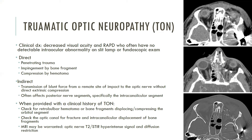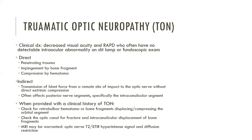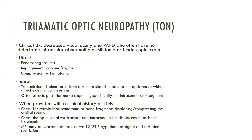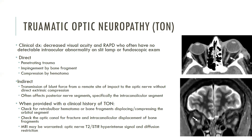Here we have images from a patient with a penetrating injury traversing the mid portion of the left orbit with transection of the optic nerve and medial as well as lateral rectus muscles. Next, a patient with skull base fractures involving bilateral optic canals. The top image demonstrates optic nerve sheath hematoma on the left, and the bottom image shows abnormal hyperintense signal within the right optic nerve in a patient with optic neuropathy.